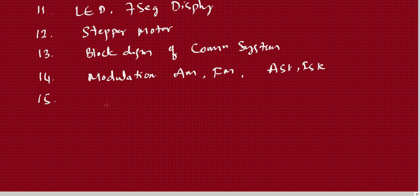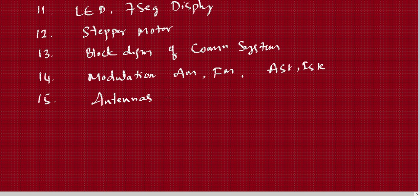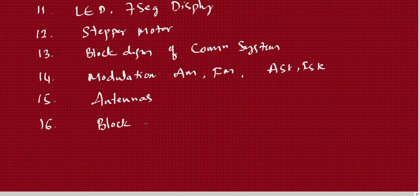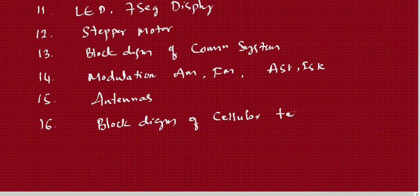Digital modulation schemes — ASK and FSK — are also very important. In the same chapter, types of antennas can be studied. The next important question is the block diagram of the cellular telephone system.